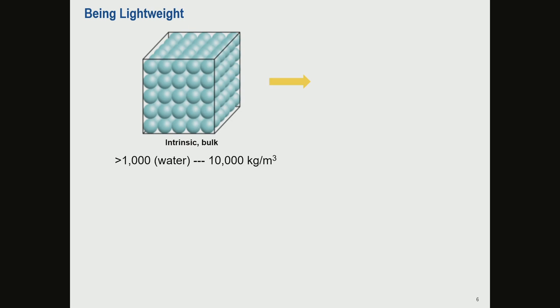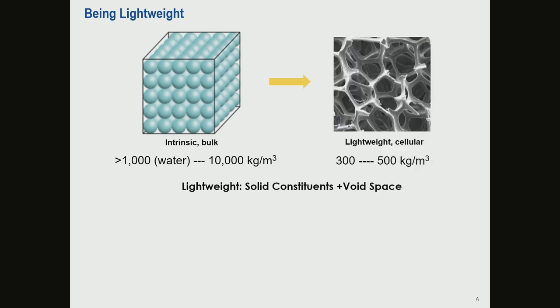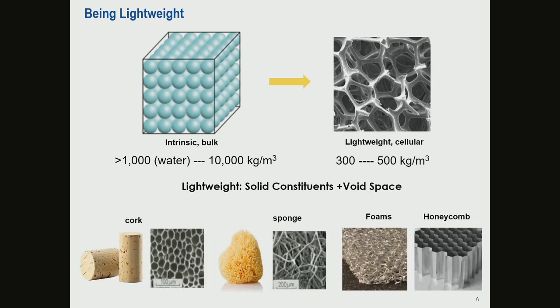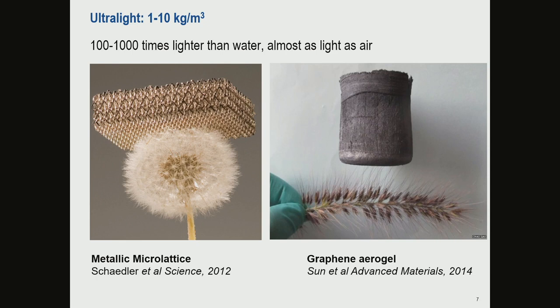For any intrinsic solid material, density is always above that of water, ranging from 1,000 to 10,000 kilograms per cubic meter. To reduce density below that of water, the only sensible approach is to introduce porosity inside solid materials — creating cellular architectures, foams, or honeycombs. Here are some extreme examples: materials as light as below 10 kilograms per cubic meter, meaning 100 times lighter than water.